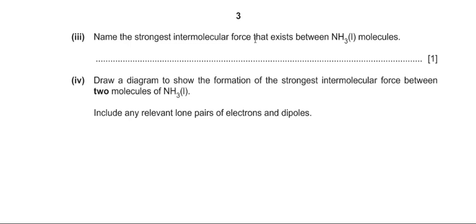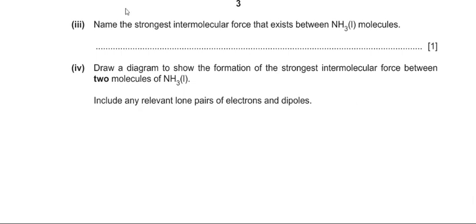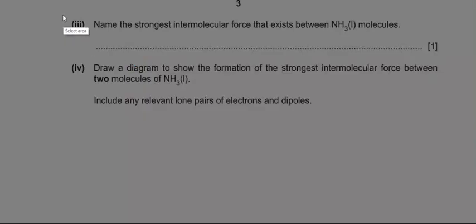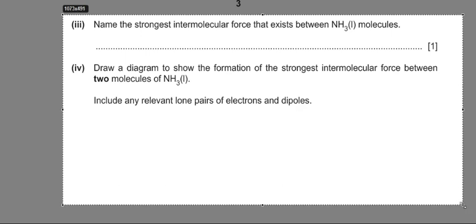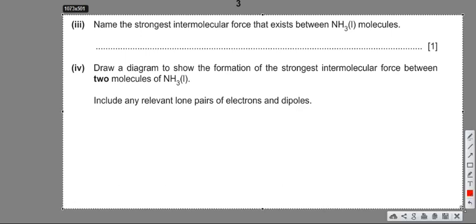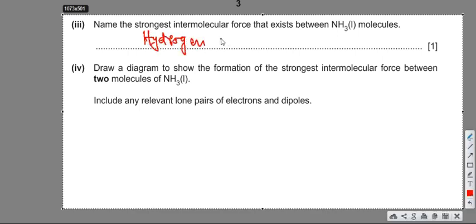Next part: name the strongest intermolecular force that exists between ammonia molecules. Remember, in ammonia we have nitrogen, which is the third most electronegative element. So we can say the force present is hydrogen bonding, or hydrogen bond — both are correct.